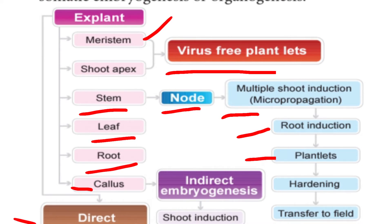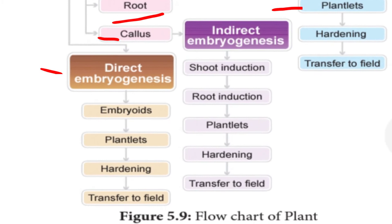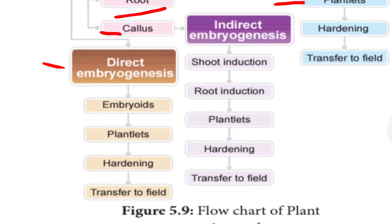Next, we are going to see direct embryogenesis and indirect embryogenesis. The indirect embryogenesis takes place from the callus. From the callus, shoot induction and root induction can take place indirectly in embryogenesis. From this, the plantlets are produced and these plantlets are transferred to the nursery beds and then exposed to the natural environment in the fields. This is indirect.